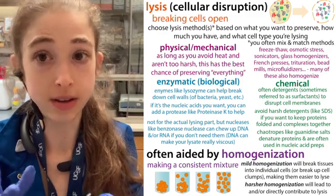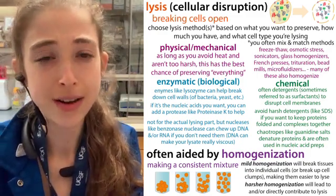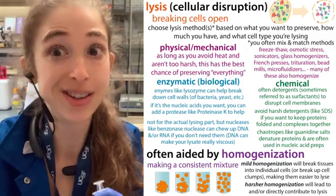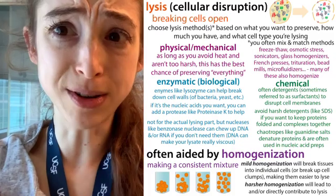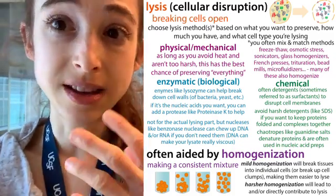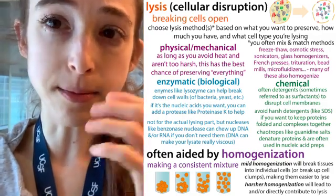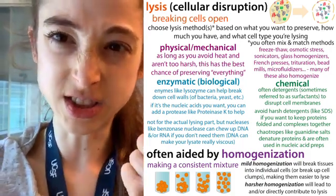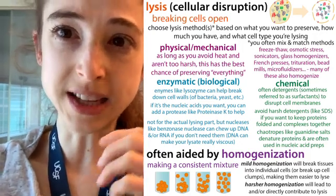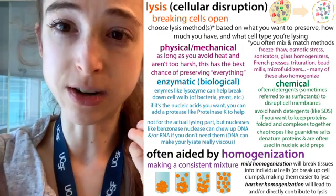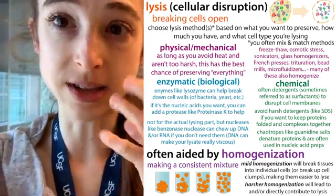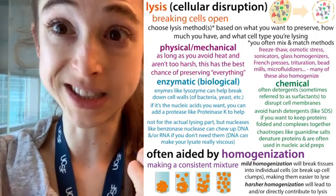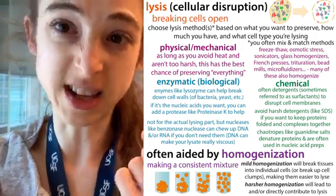So homogenization is making an even distribution of things. Then we have lysis or cellular disruption — where you actually break the cells open. This can be used in combination with homogenization; you can homogenize your lysate. The methods we normally use in the lab can be thought of as physical methods, biological methods, and chemical methods. Physical methods include trituration, Dounce homogenization, and sonication — things where you're either physically in contact with the sample or using waves. We can also do things like freeze-thaw the cells repeatedly to stress them out.